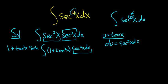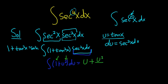So this becomes the integral of 1 plus u squared, and then here we just have du, because all of this here is du. Then we just integrate. When you integrate 1, you get u, plus when you integrate u squared, you get u cubed over 3 using the power rule — 2 plus 1 is 3, divide by that, plus c.